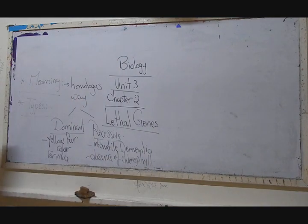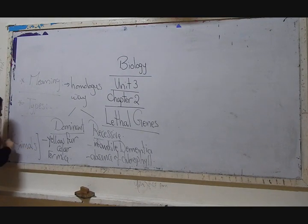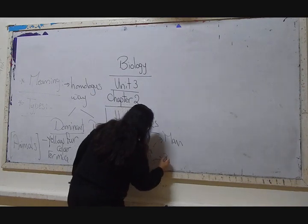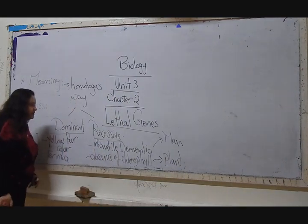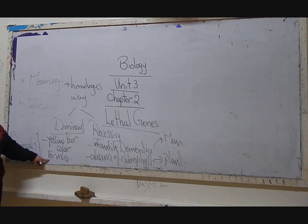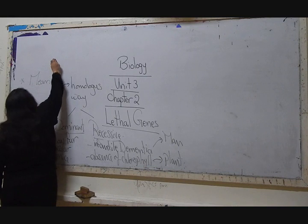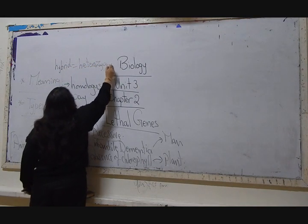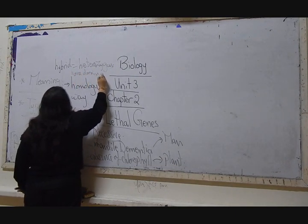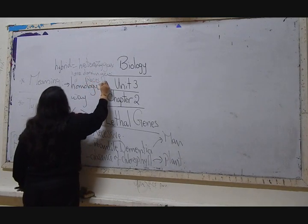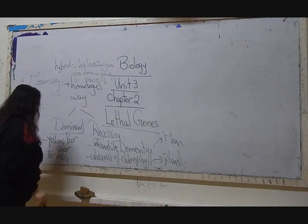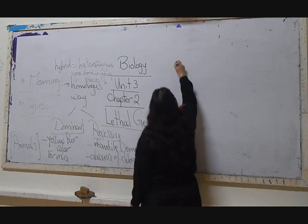We have three cases to examine. The first case is in animals, specifically in mice. The two other cases are in humans and in green plants. The pairs in cases of lethal genes should be hybrid, meaning heterozygous — having one dominant gene and one recessive gene. We will take the first case, which is yellow fair color in mice, and perform a genetic analysis between two yellow mice.